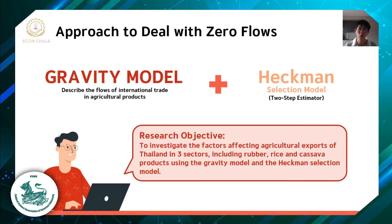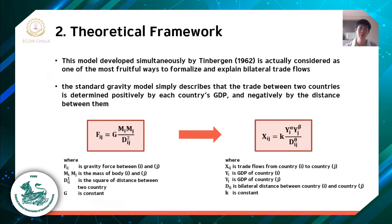The research objective is to investigate factors affecting agriculture exports of Thailand in three sectors, including rubber, rice, and cassava products, using the gravity model and Heckman's selection model.